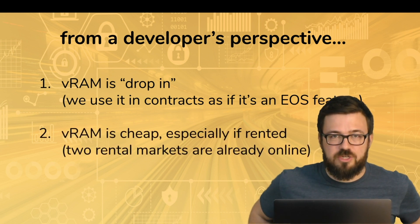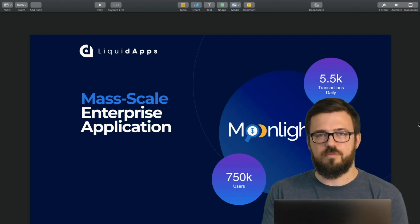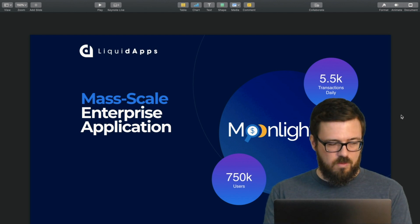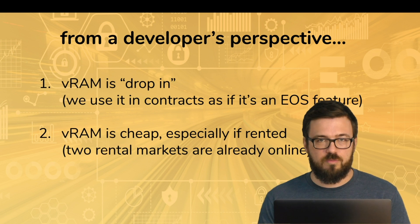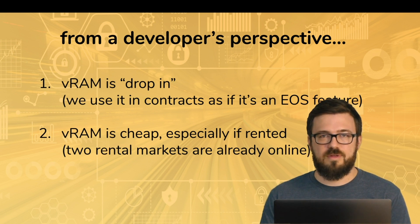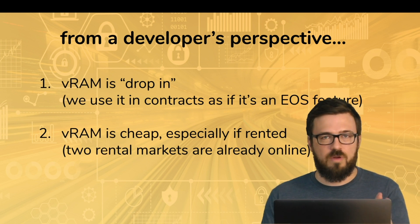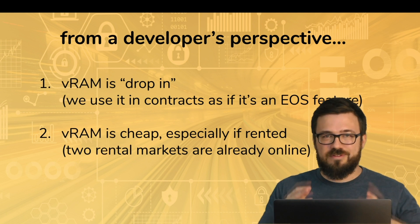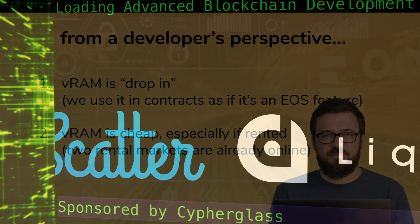VRAM is cheap, especially if rented. One example: Moonlighting Corporation, a freelancer gig economy app with about 750,000 users pushing thousands of transactions daily. According to a recent CoinDesk article, RAM alone would have cost about $2,000 a day. But by using REX for other resources and VRAM, Moonlighting pays $10 a day instead. You don't even have to stake DAP to a DSP — you can rent it through a rental market. Chintai and Blockstart both run rental markets. So VRAM is much cheaper, decentralized, scalable, and affordable — that's why we're jumping in to learn how to use VRAM in our smart contracts. See you in the next lesson.